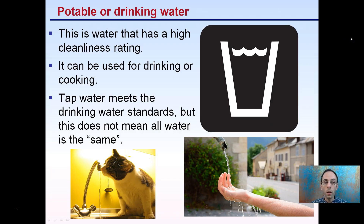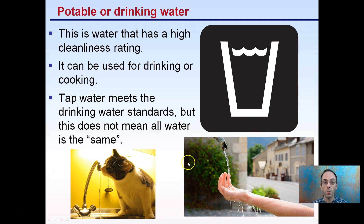Starting with potable or drinking water. This is water that has a high cleanliness rating — this is the symbol for it. Potable water can not only be used for drinking, but also for cooking or food preparation. Tap water meets drinking water standards, but this does not mean all water is the same. Just because it's potable doesn't mean there are set standards for exactly what it contains. There could be different levels of chlorine, chloramine, or other properties that still classify it as drinking water, but can have adverse effects if you're looking at adding microbes, for example.